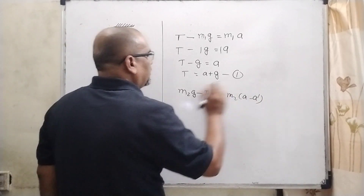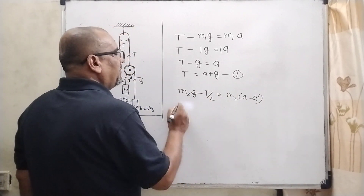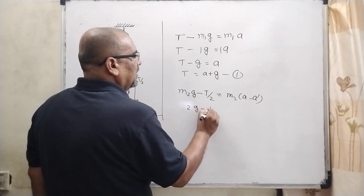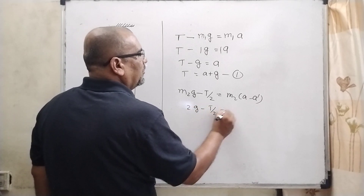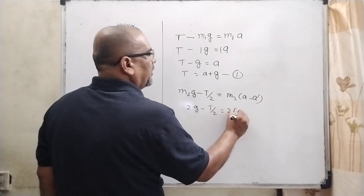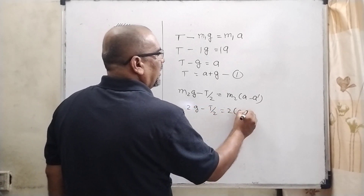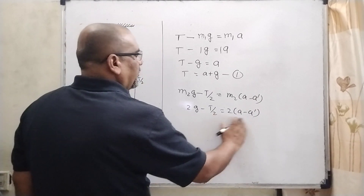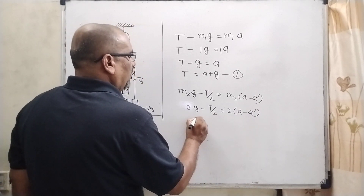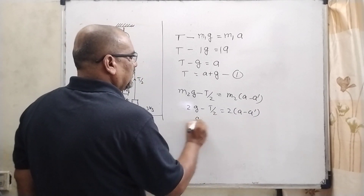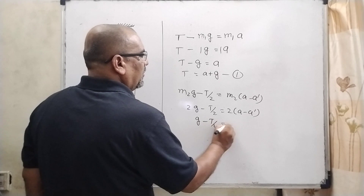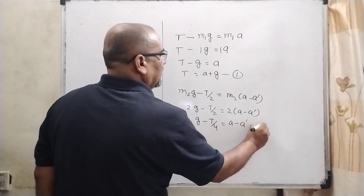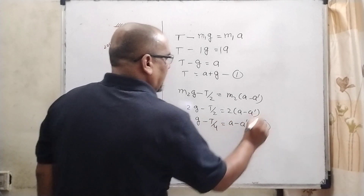Now substitute the value of M2 = 2: 2G minus T/2 equals 2*(A minus A dash). Dividing by 2, you get G minus T/4 equals A minus A dash. This is the second equation.